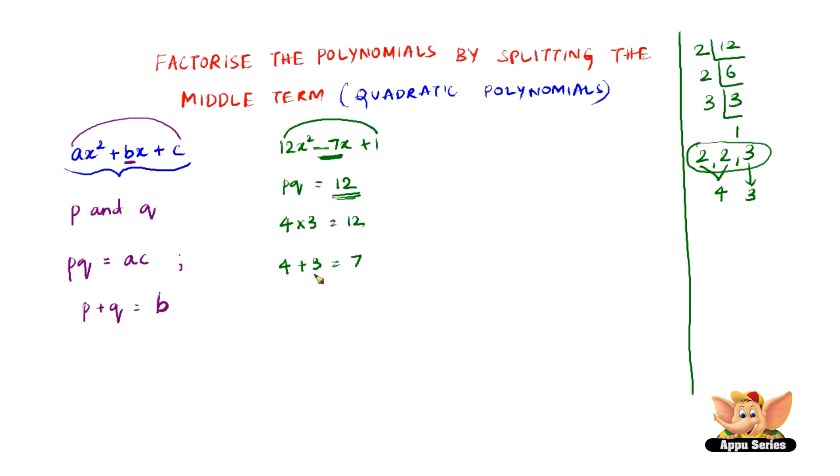But we need a negative 7. So very simple, all we need to do is change the signs, minus 4 minus 3 equals minus 7. Now what about the multiplication, yeah, minus 4 into minus 3 is also plus 12. So no problems about pq and p plus q as well. So we have got pq equals 12 and p plus q equals minus 7.